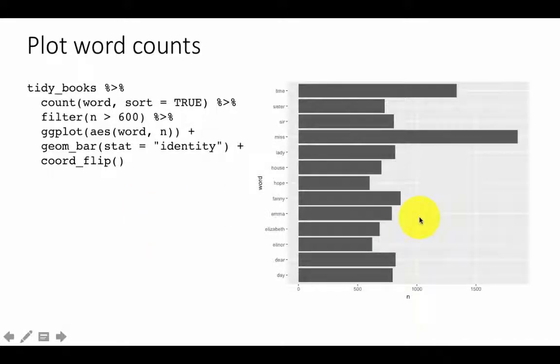The result looks like this. So the maximum number of used words, words used maximum number of times is the word miss. That has been used about 1,700, 1,800 times, about 1,800, 1,900 times. And so on. So that looks okay.